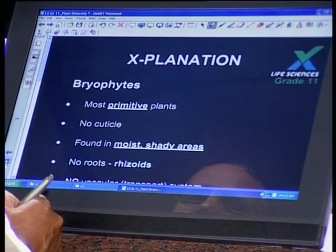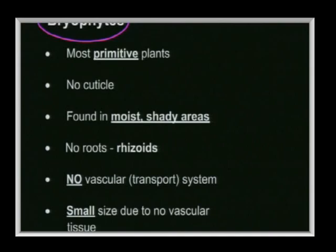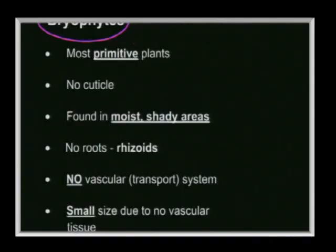Our first group is the bryophytes, considered to be some of the most primitive plants. As we go from bryophytes to pterophytes to gymnosperms to angiosperms, there is an increasing level of complexity. Bryophytes being the most primitive means that in terms of plant structure — for example, having roots, leaves, stems, and flowers — they don't have those complex structures.